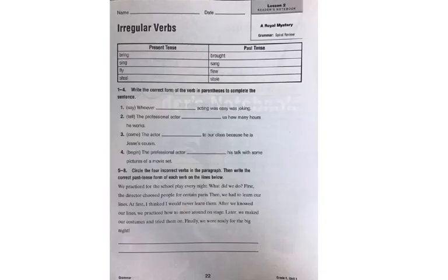Irregular verbs. I don't think this is going to be too tricky for you — it's a refresher from last year. You started working on irregular verbs at the end of third grade, but you covered irregular verbs in four different sections last year. An irregular verb is when we don't add -ed to the end of a word to make it past tense.